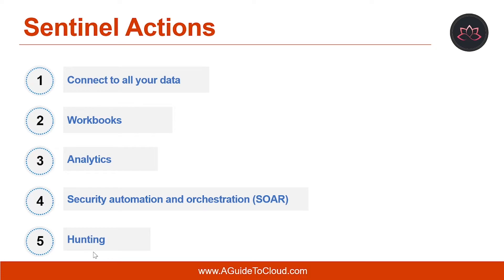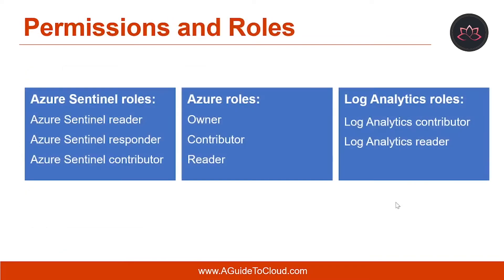The last element is hunting. Use Azure Sentinel's powerful hunting, search, and query tools based on the MITRE framework, which enables you to proactively hunt for specific threats across your organization's data sources before an alert is triggered. Azure Sentinel uses role-based access control to provide built-in roles that can be assigned to users, groups, and services in Azure. Using RBAC, you can use and create roles within your security operations team to grant appropriate access to Azure Sentinel.